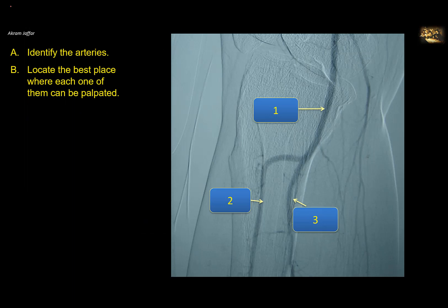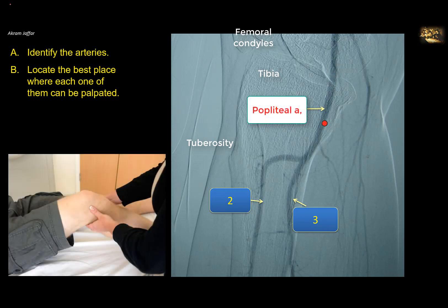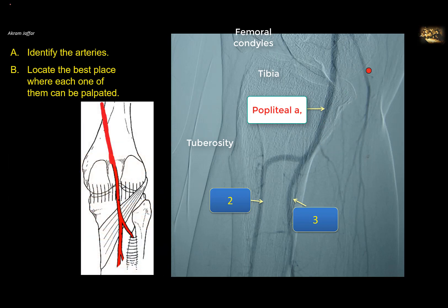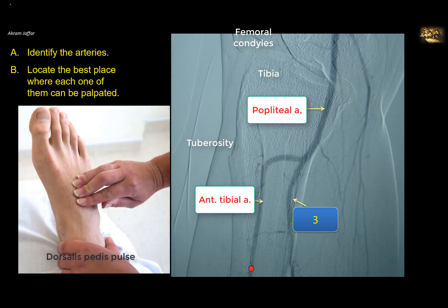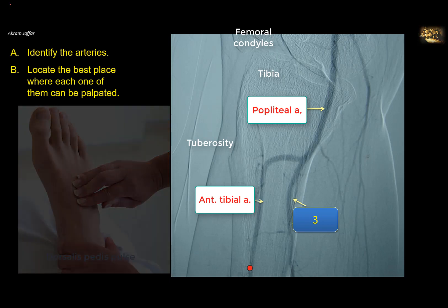Identify the arteries and locate the best place where each one can be palpated. This is an angiogram showing the shadow of the tibia — the tuberosity, the plateaus, and the condyles of the femur. The artery located posterior to the tibia and femur is the popliteal artery, the direct continuation of the femoral artery. It supplies genicular and muscular branches. At the distal border of the popliteus muscle it divides into the anterior tibial artery, which passes between the tibia and fibula above the interosseous membrane and supplies the anterior compartment. It passes in front of both malleoli and can be palpated there, or better, its continuation — the dorsalis pedis artery — can be palpated on the dorsum of the foot just lateral to the tendon of extensor hallucis longus.